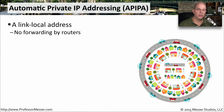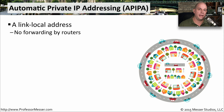In IP version 4, you either need to manually configure an IP address on your workstation, or you need to have one automatically assigned by a DHCP server. But what if you've not assigned one on your workstation, and for some reason you're not able to communicate to a DHCP server? Fortunately, there is a middle ground.